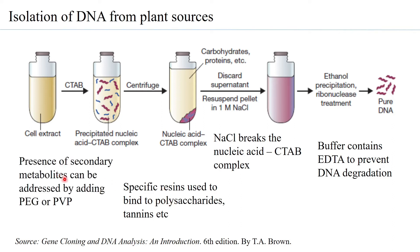Plants with high secondary metabolites, especially phenolics, can become oxidized and produce brown coloration. To prevent phenolic oxidation, PEG or PVP can be added to reduce the formation of brown pigments. These are small modifications that can be made to ensure the plant DNA sample is obtained in a more or less pure form.